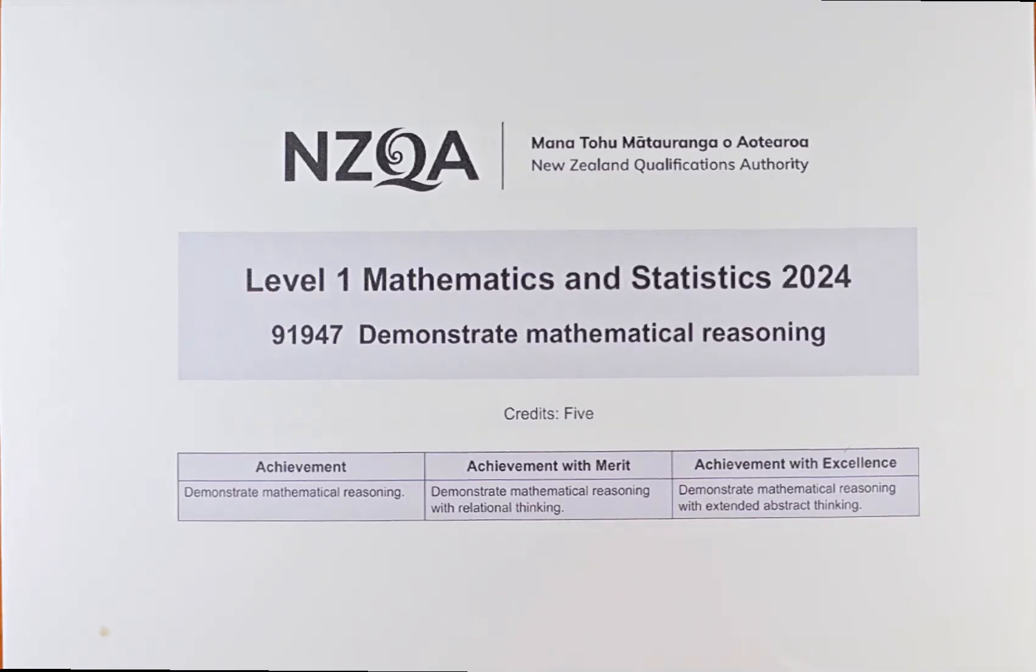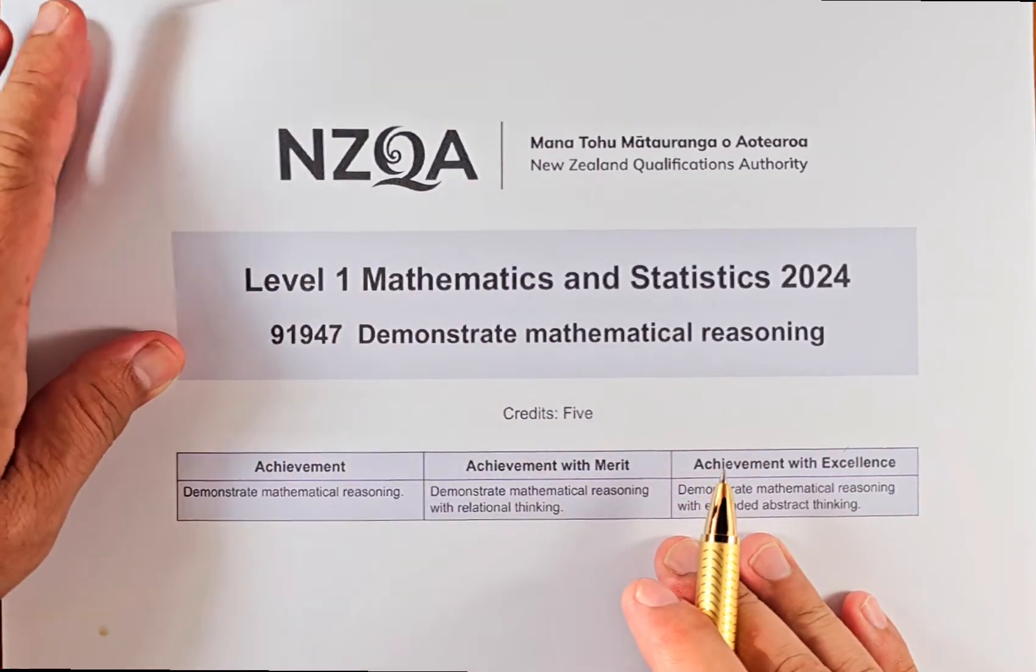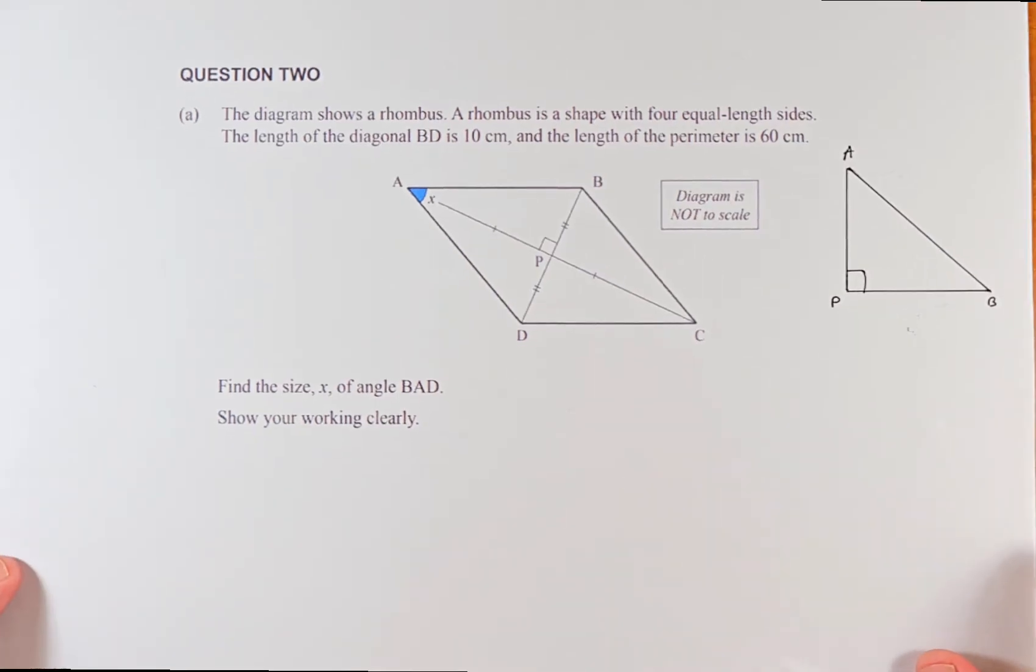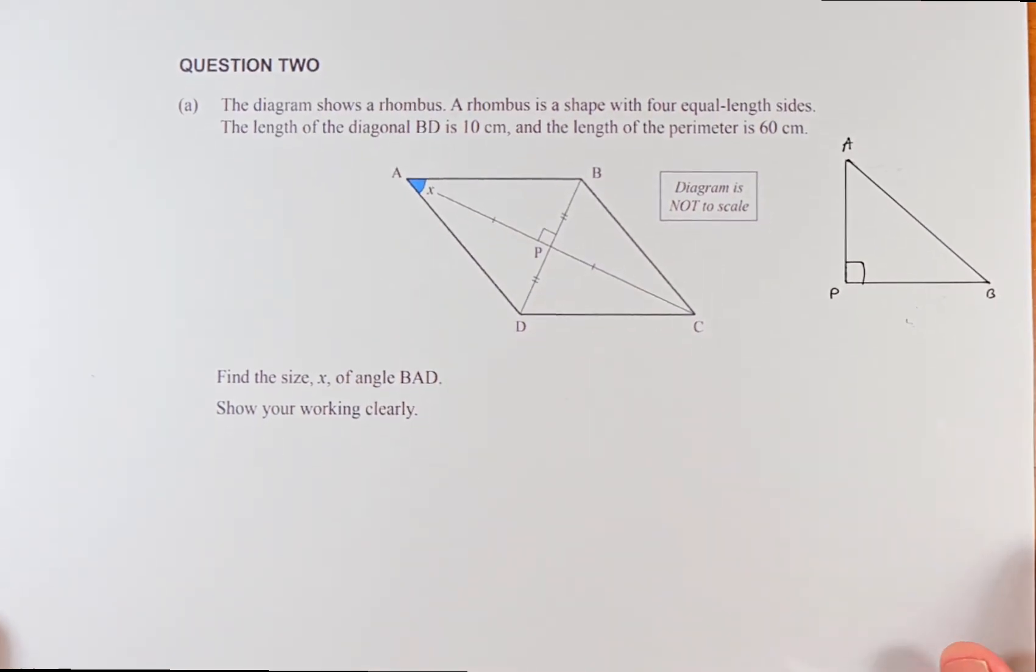So without further ado, let's do question 2a. This is a merit question. The diagram shows a rhombus, which is a shape with 4 equal sides. The length of the diagonal BD is 10.